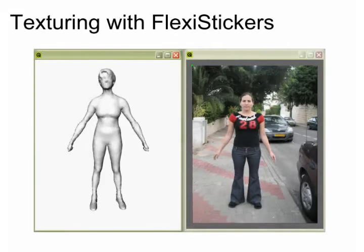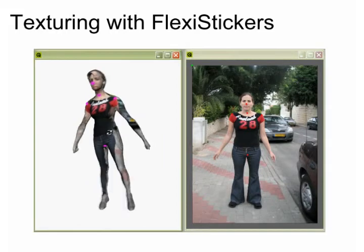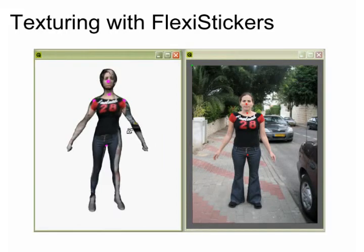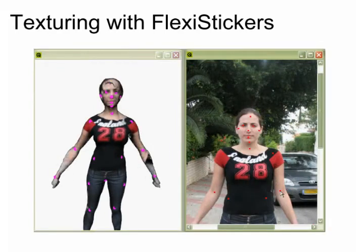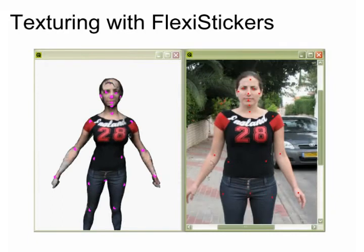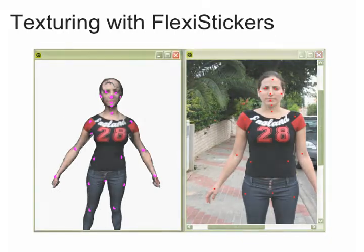We now show an interactive session texturing a more complex example, a model of a woman. The user starts by specifying five constraints, which are insufficient. The user then adds more constraints, and the result is improved accordingly. It can be seen that our system overcomes the differences in shape, proportions, and articulation between the model and the photographed object.